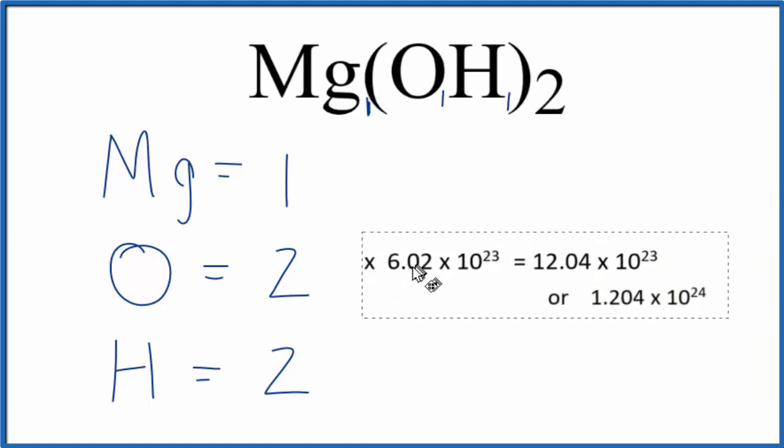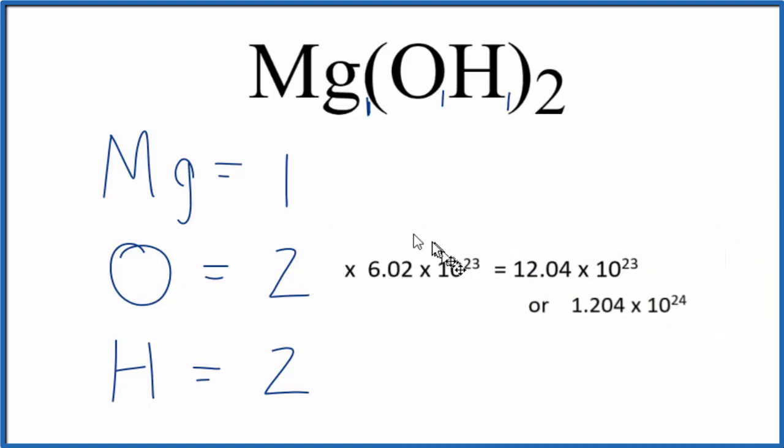And we can do that, just multiply the number of oxygen atoms times Avogadro's number here. 2 times this Avogadro's number gives us 12.04 times 10 to the 23rd atoms of oxygen in one mole of magnesium hydroxide.